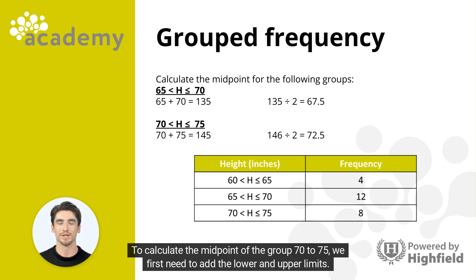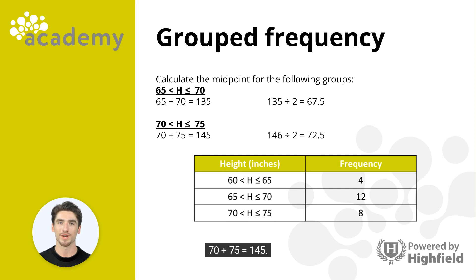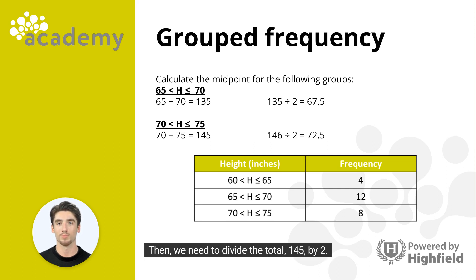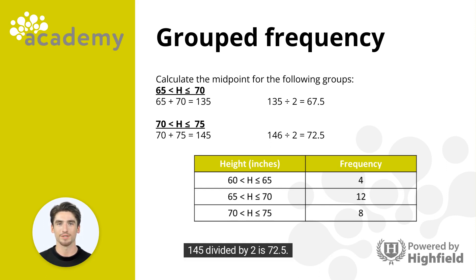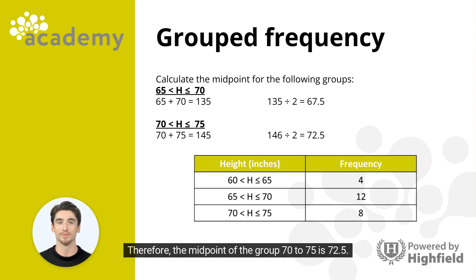To calculate the midpoint of the group 70 to 75, we first add the lower and upper limits: 70 plus 75 equals 145. Then we divide 145 by 2. 145 divided by 2 is 72.5. Therefore, the midpoint of the group 70 to 75 is 72.5.